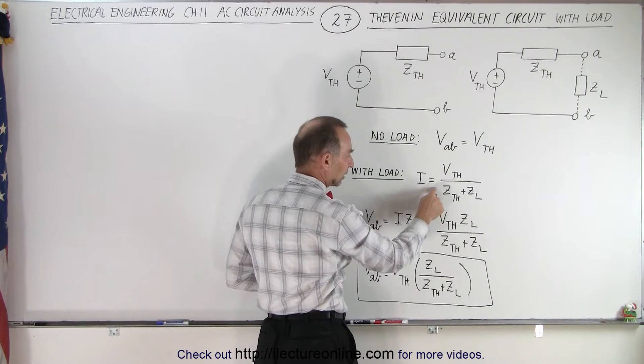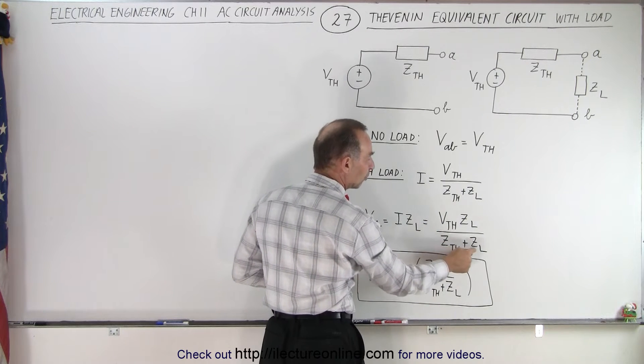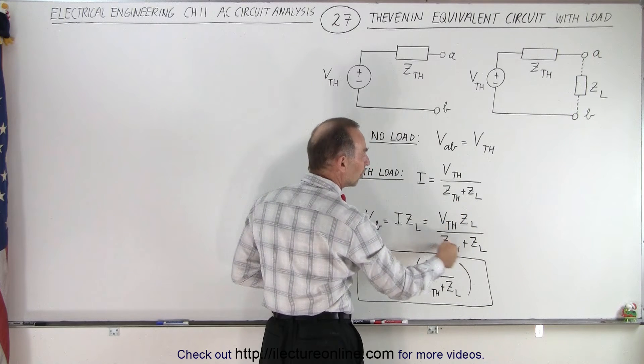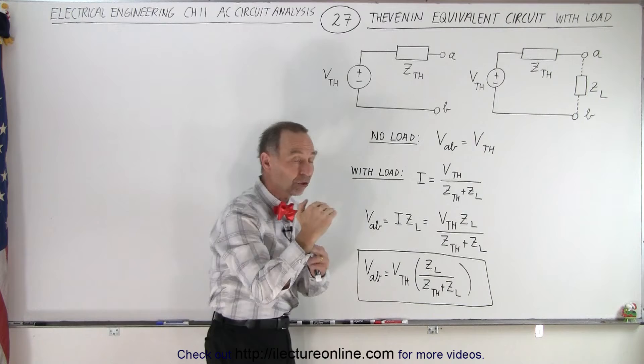Now the current is calculated here, which is the Thevenin voltage divided by the total impedance of the Thevenin impedance plus the load impedance. And then you multiply that times the load impedance to find the voltage across the load.